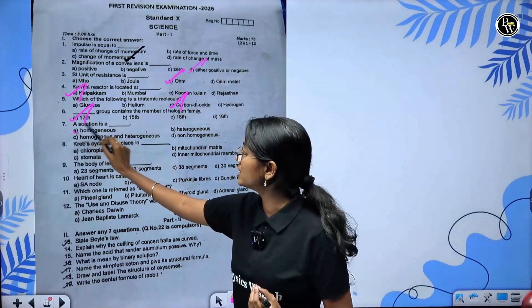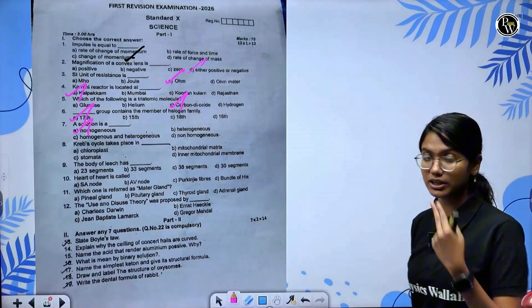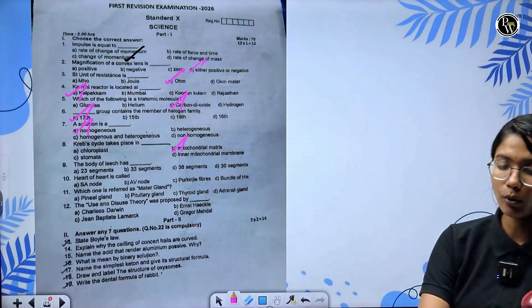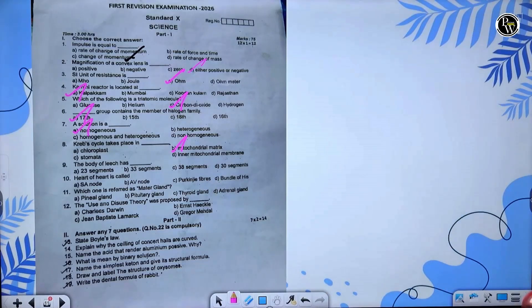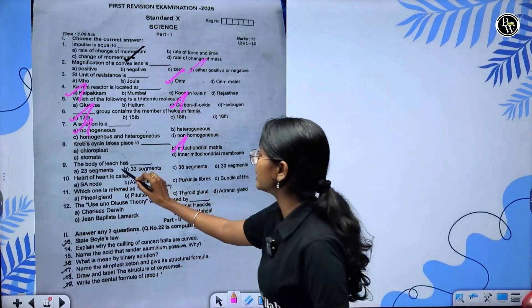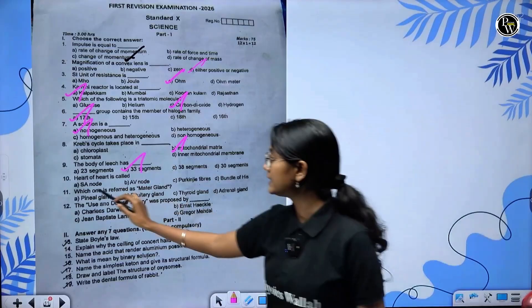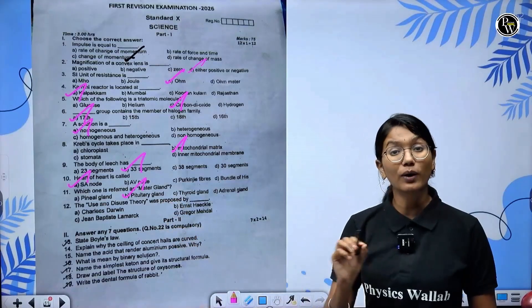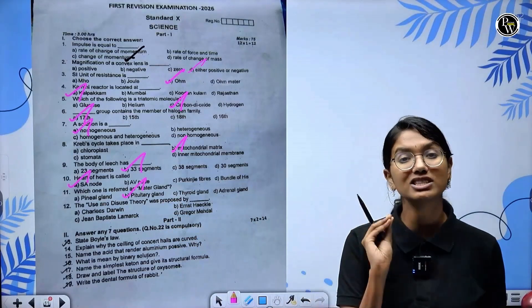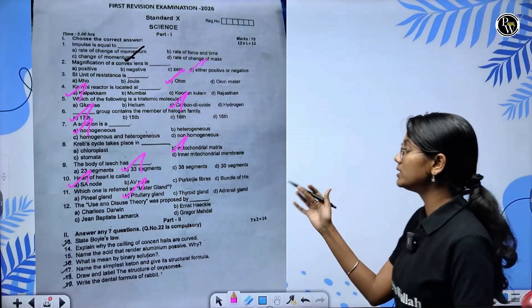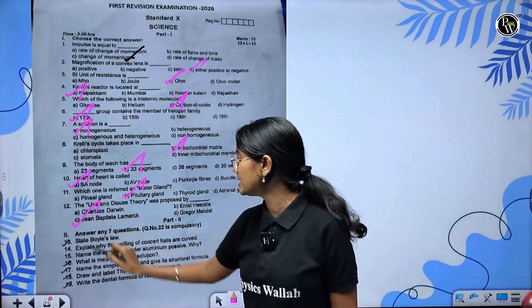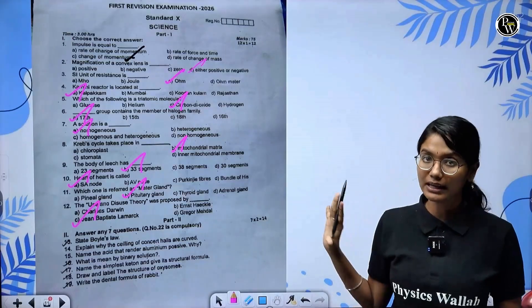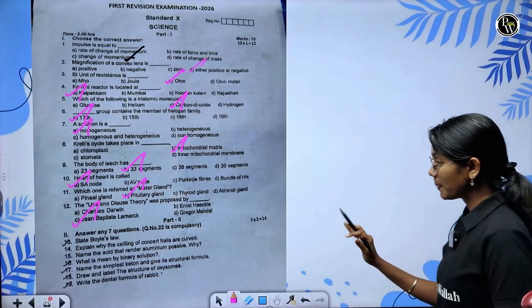Krebs cycle takes place in mitochondrial matrix. The body of leech has 33 segments. Heart is called SA node. Which one is referred as master gland - pituitary gland. The one marks you can easily answer. The use and disuse theory was proposed by Jean Baptiste Lamarck.